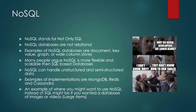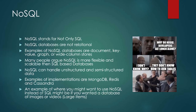NoSQL, which we're going to be talking about more later in the term, stands for 'not only SQL.' NoSQL databases are not relational. We have been talking about relational databases so far and we're going to be sticking to them for a little bit. Examples of NoSQL include graph or wide column stores. NoSQL is more flexible and scalable and can handle unstructured and semi-structured data. MongoDB, Redis, and Cassandra are NoSQL databases. You might want to use NoSQL for large databases with large values like images and videos.